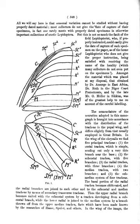Anaplasmosis: infection with anaplasma, a genus of sporozoa that infests red blood cells. Anasa wilt: wilt disease of cucurbits caused solely by the feeding of the squash bug; no parasitic microorganism involved.